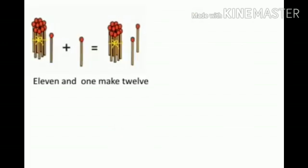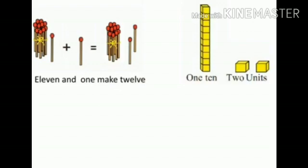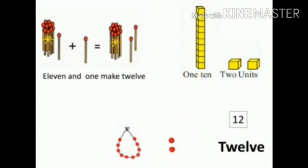Here, 1 bunch of math sticks is there — that is, 10 math sticks. With 1 math stick added, 11 plus 1 math stick equals 12 math sticks. 11 and 1 make 12. The 10-group of blocks is 1 ten, and 2 blocks is 2 units. That is, 12, and the spelling of 12 is T-W-E-L-V-E.